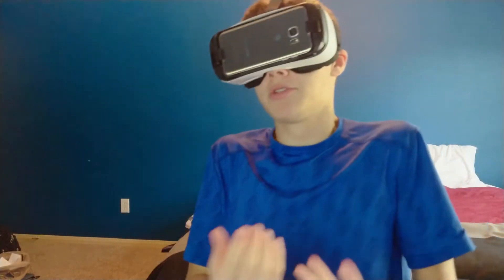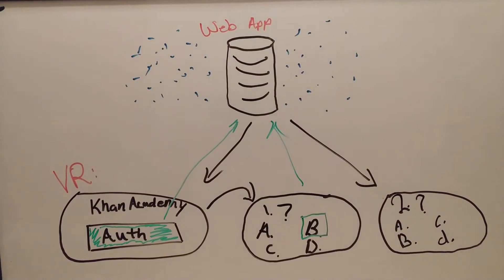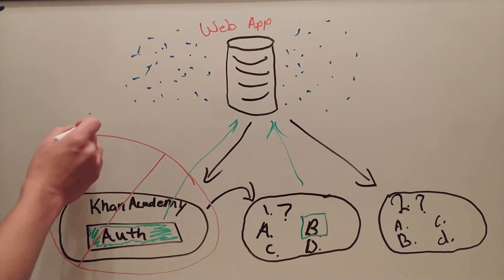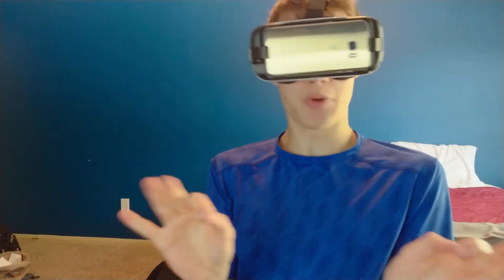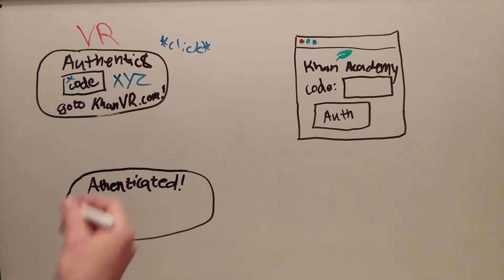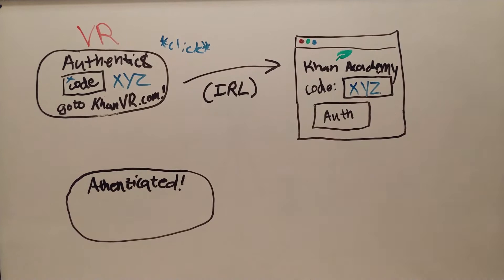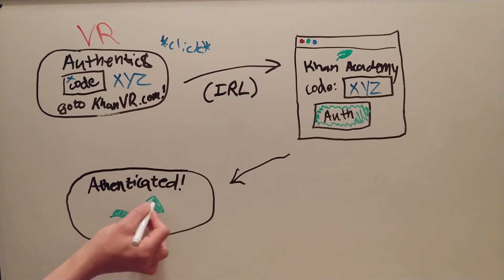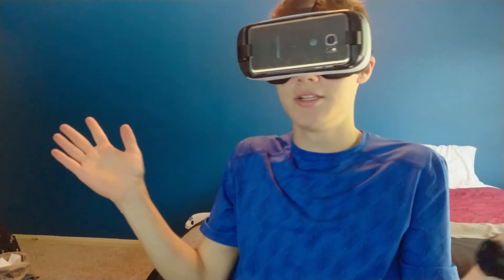I originally wanted to be able to authenticate within the VR experience, but there was only one plugin that allowed you to use a browser within Unity, and it cost $80 — way out of the budget. So I settled on the user having to select to get a code, and then from that code they would go to the website, take off the headset, and enter the code into the website. It would say 'authentication success' once they went through all the authentication process, and then they could slip the Gear back on and be taken to study.